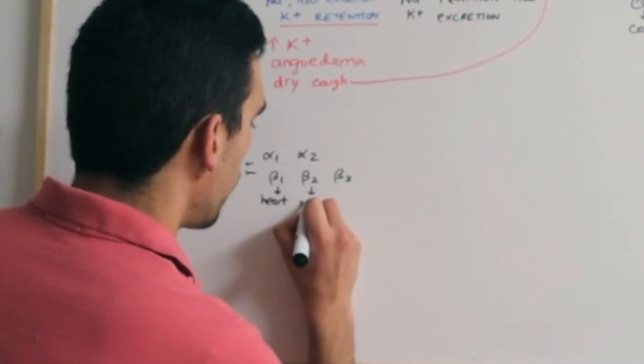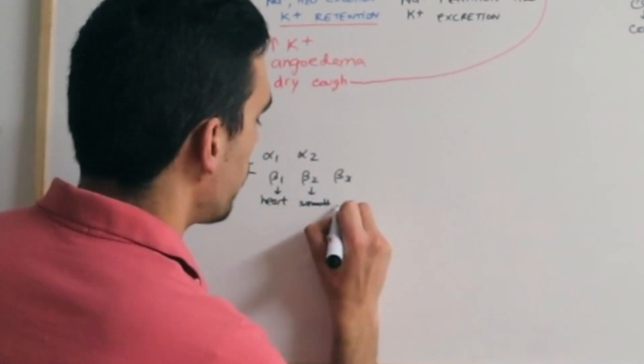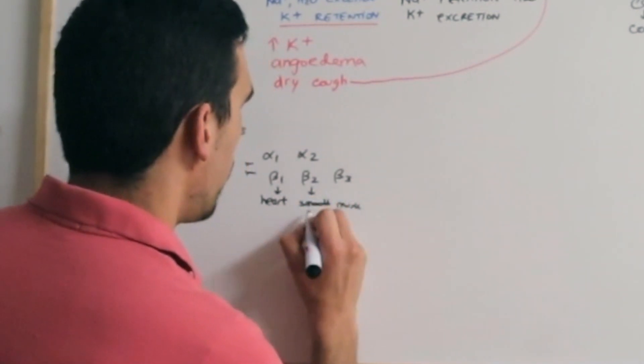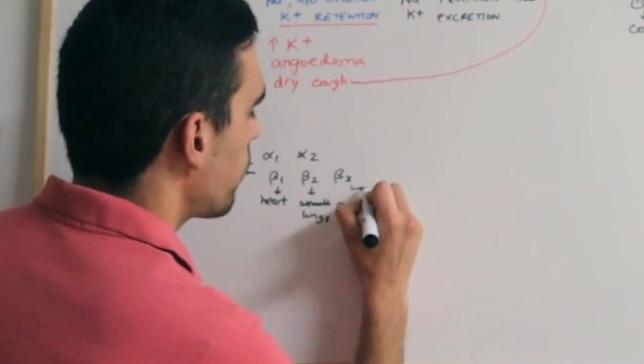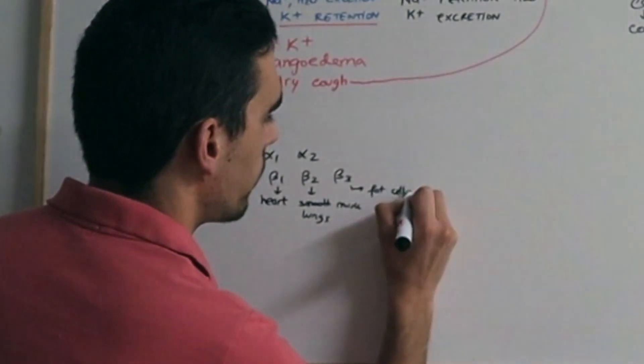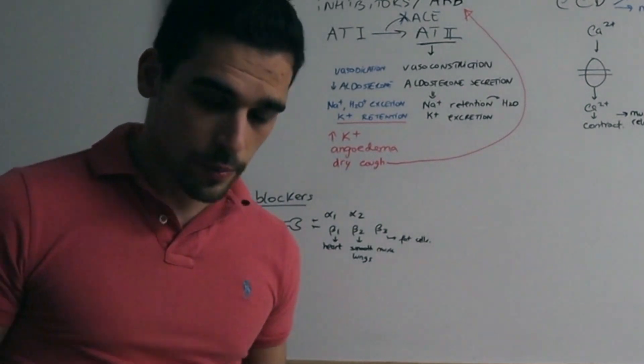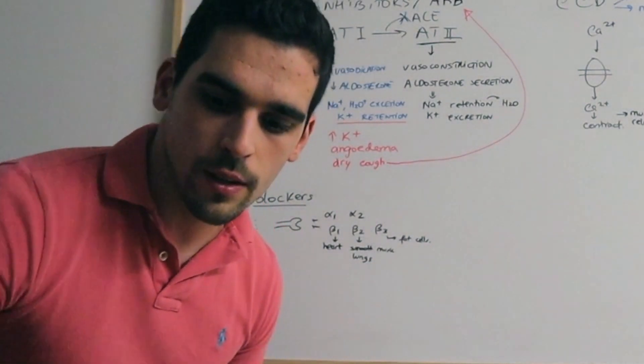The beta-2 can be found on the smooth muscle and also on the lungs. And the beta-3 can be found on fat cells.